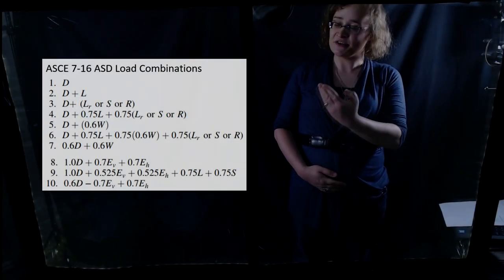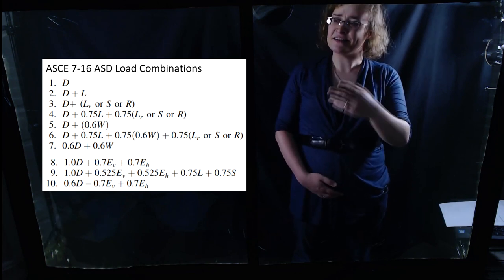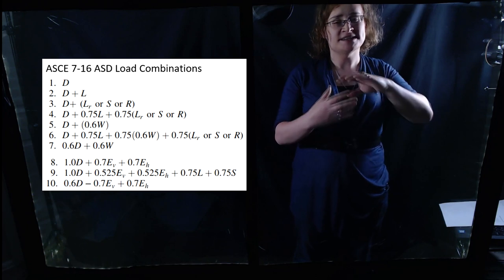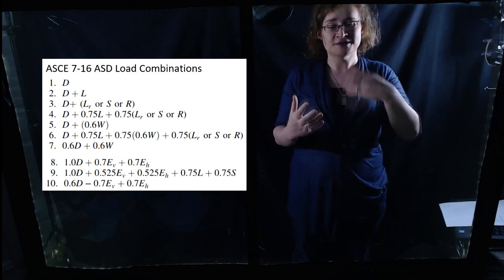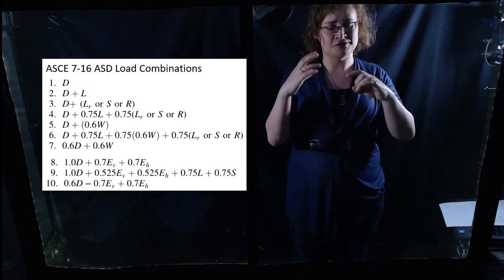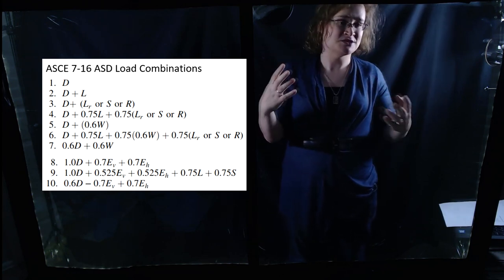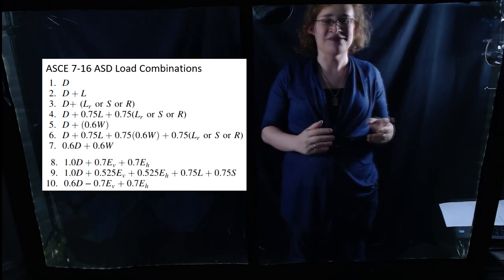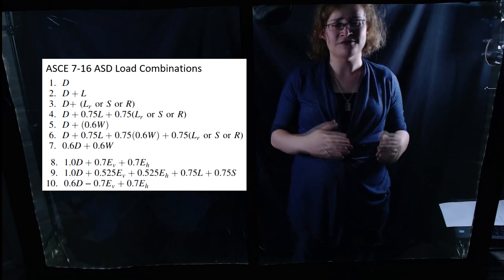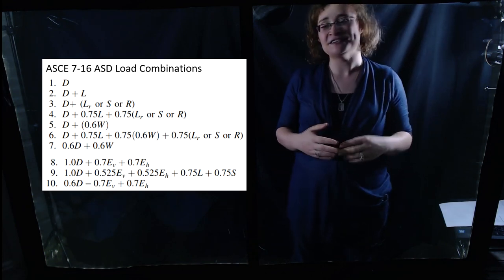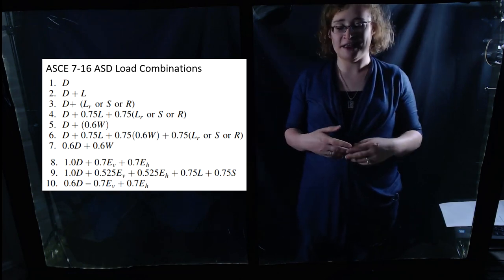Now let us consider the ASCE 7-16 ASD — allowable stress design — load combinations. I don't want to go through each and every one of these, but you can see that the same kind of general approach applies in some of our combinations: certain loadings are emphasized, whether that's live load or roof live load or wind load or seismic load. They consider different combinations, and with your extreme event you tend to have a normal level of dead load or a normal level of live load, unless it's one of those reverse cases where you have a force acting opposite to gravity.